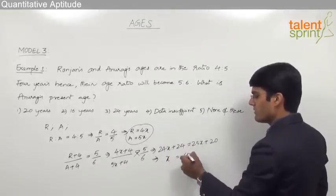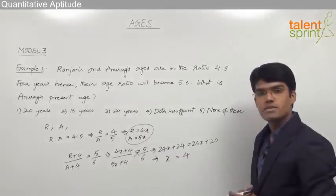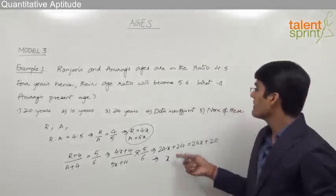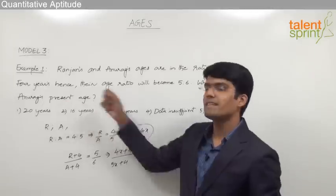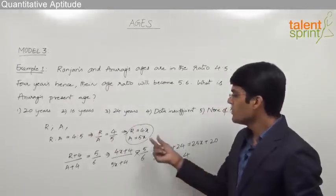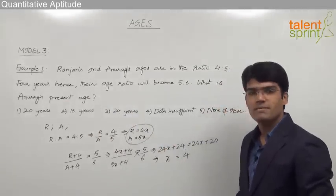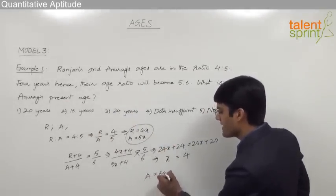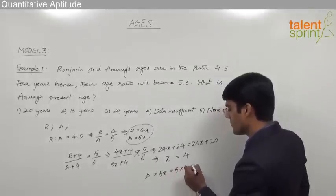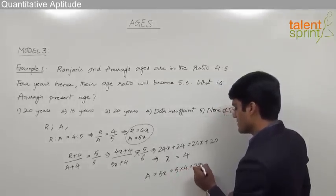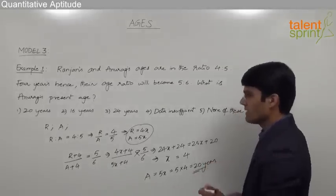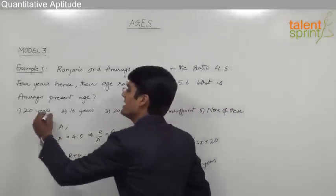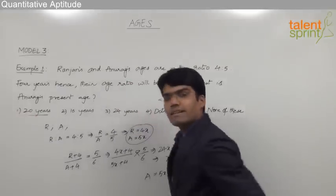From this we can say 25x minus 24x equals 24 minus 20, so x equals 4. We have to find Anurag's present age. We know that Anurag's present age is 5x, so Anurag's present age is 5 times 4, that is 20 years. So option one — 20 years — is the correct answer.